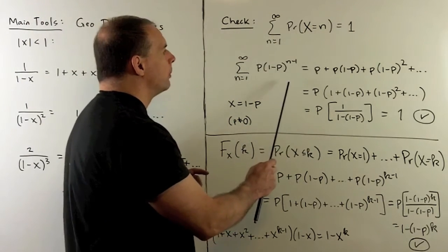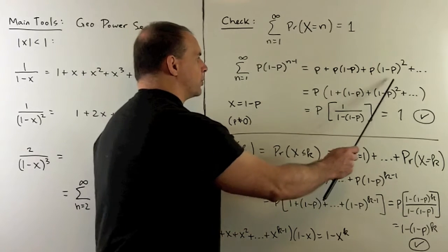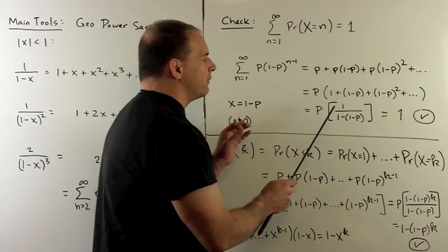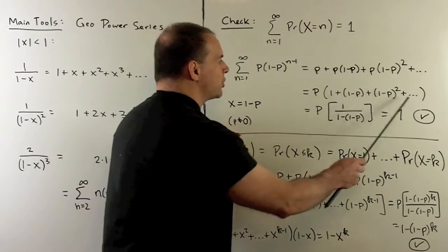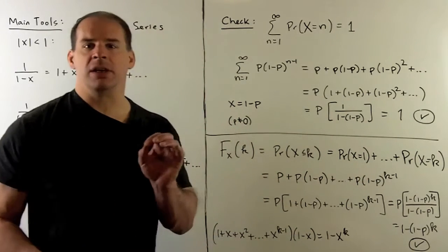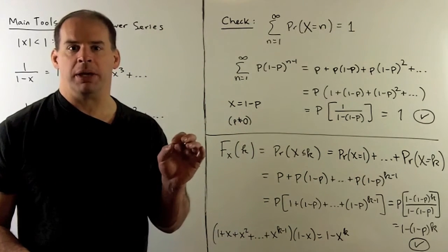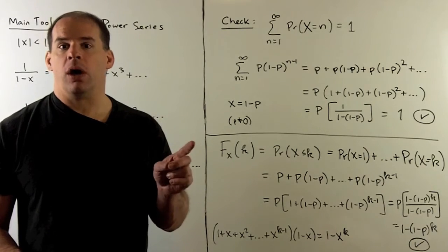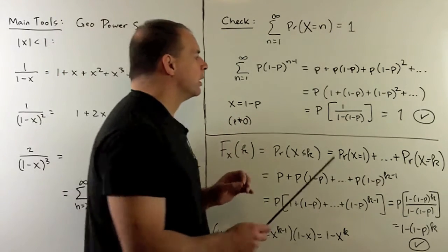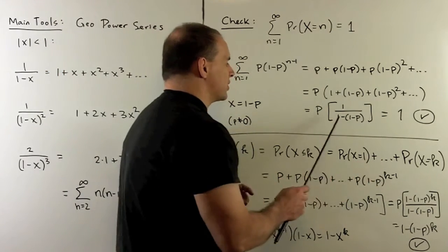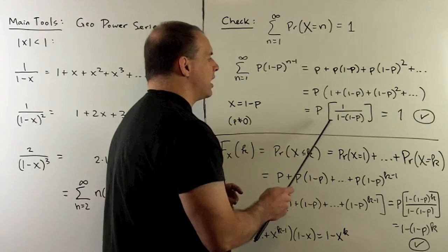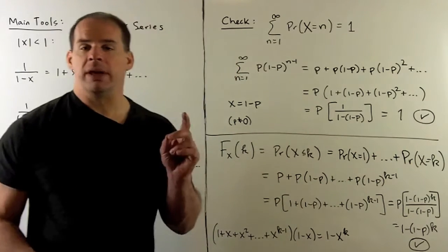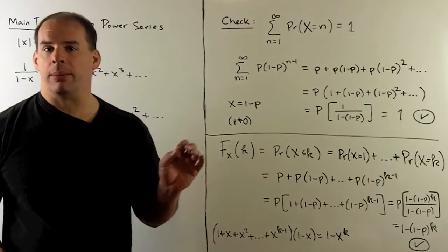What's left over is a geometric series where we're setting X equal to 1 minus P. Since 1 minus P is between 0 and 1, this converges. So we take the sum: we have P times 1 over P, and that equals 1. So we do, in fact, have a probability distribution.